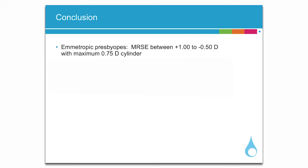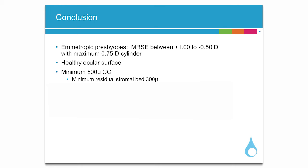In conclusion, when selecting Raindrop patients: select emmetropic presbyopes with a manifest refractive spherical equivalent between plus 1 to minus 0.5 diopters with maximum 0.75 diopter cylinder. Select patients with a healthy ocular surface and no dry eyes, as the flap will be created at 30% of central corneal thickness. Choose patients whose pachymetry will allow a residual stromal bed of a minimum of 300 microns, and select patients with easygoing, glass-half-full type personalities.